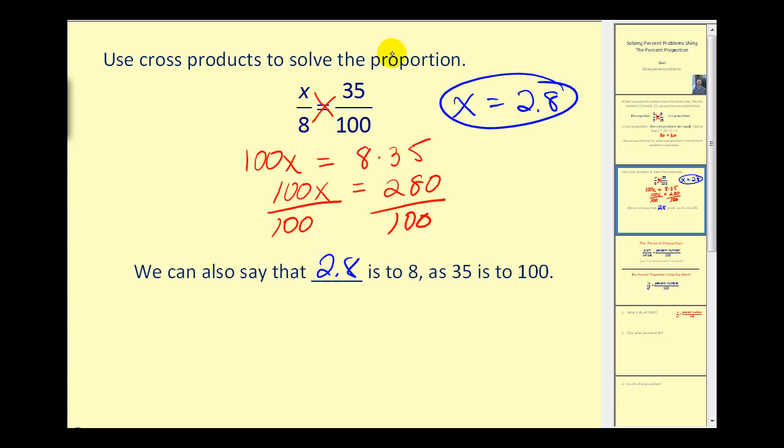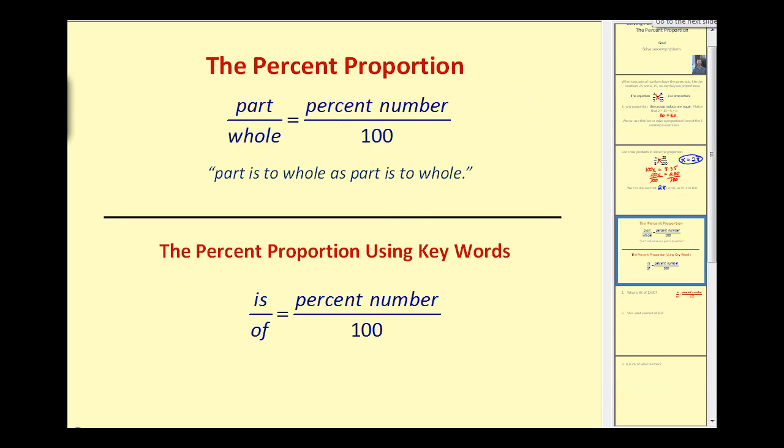This is exactly how we will solve percent problems using the percent proportion. The percent proportion states that the part is to the whole as the percent number is to 100. But to set these up, sometimes it's difficult to determine which is the part and which is the whole. So I like to use key words. The number associated with 'is' will be in the numerator, and the number associated with 'of' will be in the denominator. If we have the percent, it will be the number over 100.